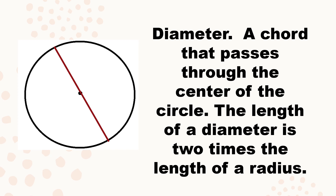Diameter is a chord that passes through the center of the circle. The length of a diameter is two times the length of a radius. The diameter is also a chord because its endpoints are on the circle. The only difference is that the diameter passes through the center of the circle.